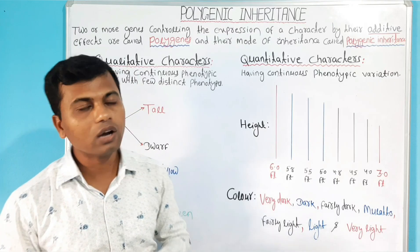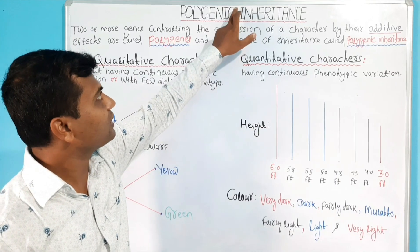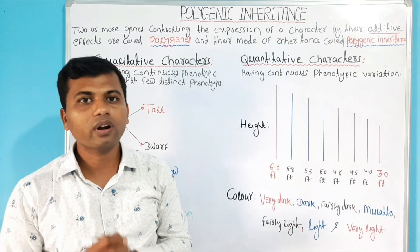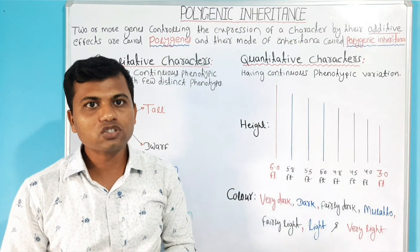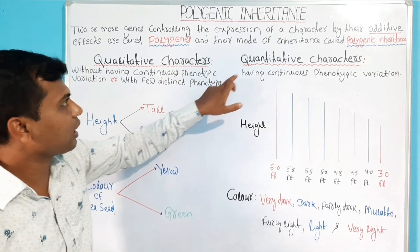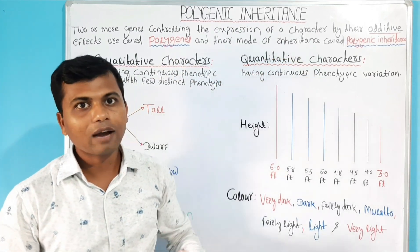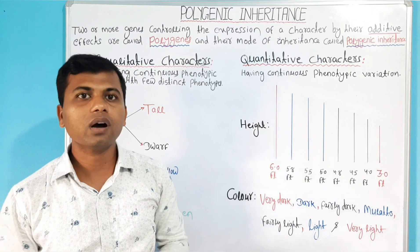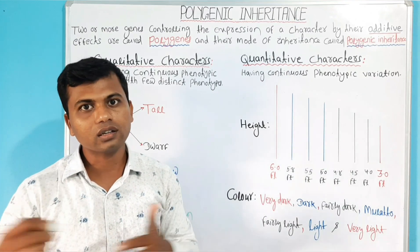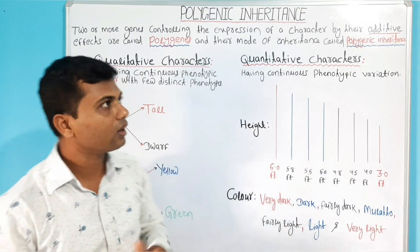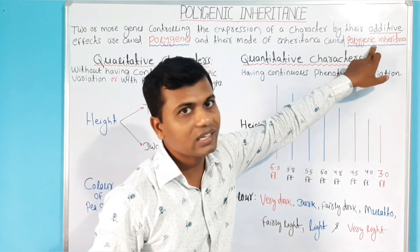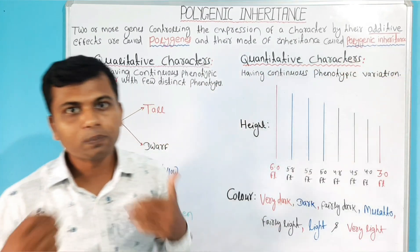Now, we discuss about Polygenic Inheritance. To understand Polygenic Inheritance, first we have to understand Qualitative Characters and Quantitative Characters. After we understand about Qualitative Characters and Quantitative Characters, we can easily explain what are the polygenes and what is Polygenic Inheritance.